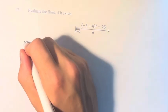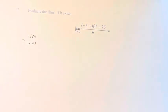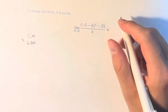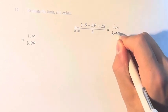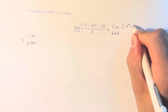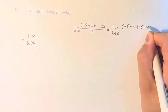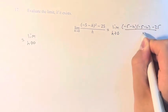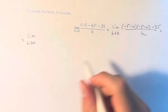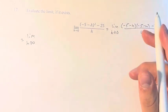So we can say that this equals the limit as h approaches 0 of, and we're going to write it as an intermediate step: (-5 - h) times (-5 - h). We need to distribute this out.